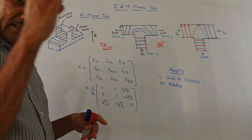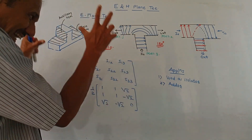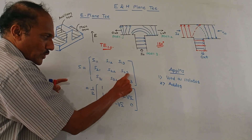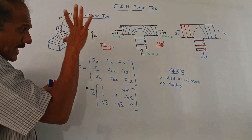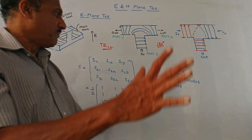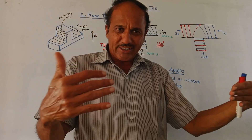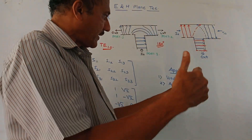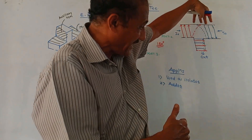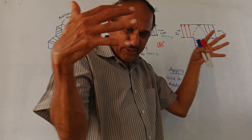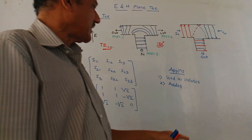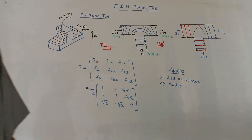Regarding the S-matrix of E-plane T: since there are three ports, the S-matrix is 3×3, with notations S11, S12, S13 in the first row; S21, S22, S23 in the second row; and S31, S32, S33 in the third row. You need to remember this matrix and the corresponding values for the E-plane T junction. Applications of E-plane T: it is used as an isolator and as an adder — when inputs from both ends of the main arm are in opposite directions, the outputs add up and maximum output is generated.